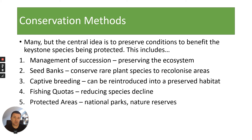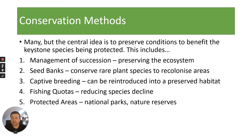Captive breeding is another method — things like zoos and wildlife parks. For example, Chester Zoo does a lot of captive breeding work and is looking at releasing animals into their natural environments in preserved habitats. Fishing quotas are also used to protect fish stocks in the oceans, reducing species decline. In this country, the UK also has protected areas — national parks, nature reserves, sites of special scientific interest, and many other protected areas.